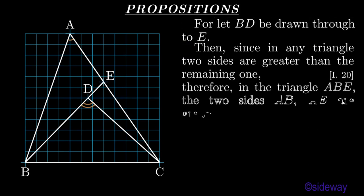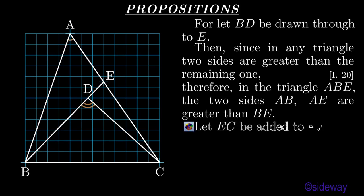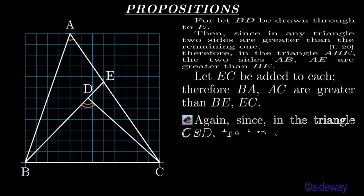Then, since in any triangle two sides are greater than the remaining one, by Book 1 Proposition 20, therefore in the triangle ABE the two sides AB, AE are greater than BE. Let EC be added to each. Therefore BA, AC are greater than BE, EC.